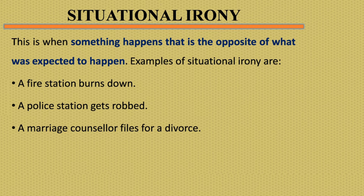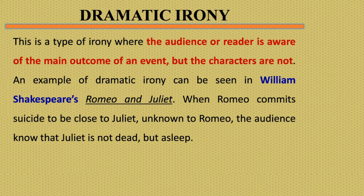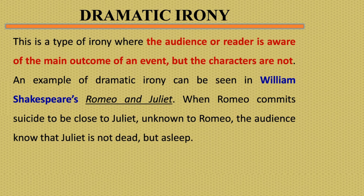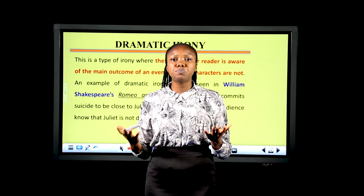Dramatic irony is when the audience or readers are aware of the happenings or main outcome in a play, but the character is not fully aware of what is going on. For example, in Romeo and Juliet, Romeo commits suicide to be close to Juliet. Unknown to Romeo but to the full knowledge of the audience, Juliet is not dead but asleep.